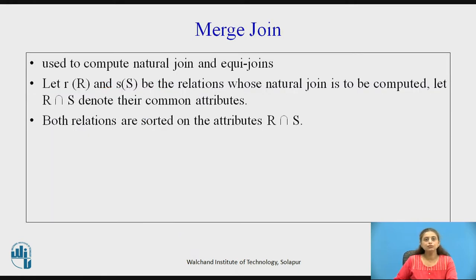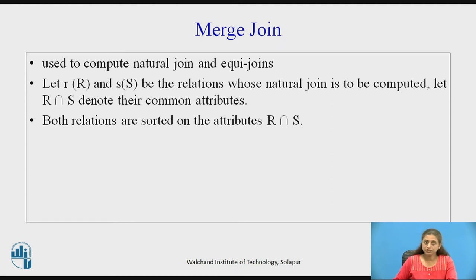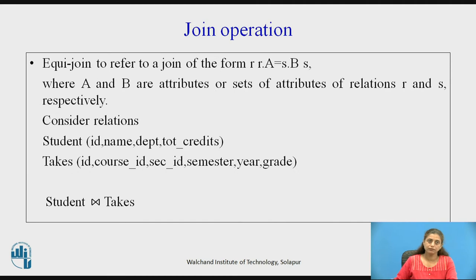Merge join is used to compute natural joins and equi joins. Consider that we are having R and S relations, and R intersection S will give you the common attributes. It is assumed that both relations are sorted on these common attributes while performing the join operation.